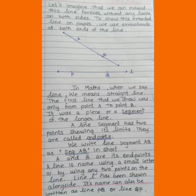We write line segment AB as seg AB in short. A and B are its end points. A line is named using a small letter or by using any two points on the line. Line L has been shown alongside. Its name can also be written as line PQ or line QP.